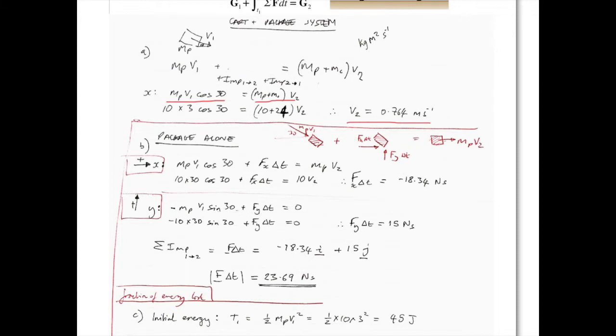Doing the same for y, we have initially we're coming down because the package is dropping, so our y-momentum is initially negative. Afterwards, we have zero y-momentum, so the impulse must be such that it stops all of that motion. And equating that, we can find that the Fy·Δt is equal to 15 newton seconds, which are the units of impulse.